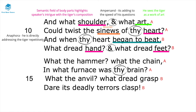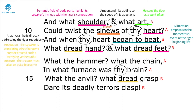The reference to 'began to beat' — again plosive sounds — the alliteration here emphasizes the momentous event of the tiger starting life. The repetition of 'dread' shows that the speaker is wondering what kind of fearsome creator, what kind of God, would create such a terrifying yet beautiful creature — the creator must also be equally fearsome.